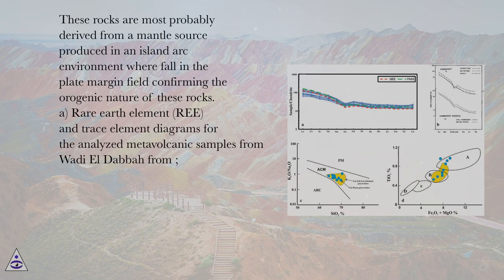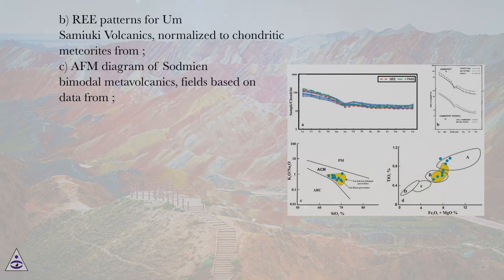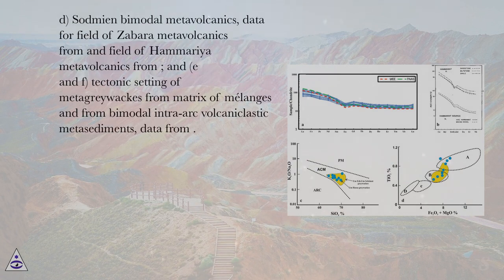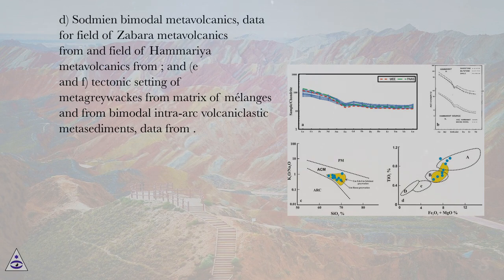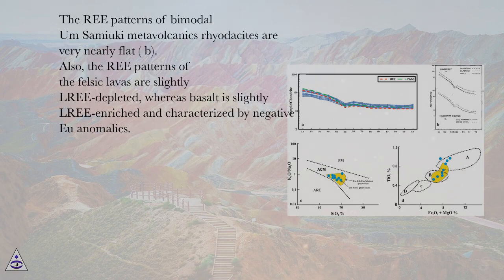Rare earth element (REE) and trace element diagrams for analyzed metavolcanic samples from Wadi el-Daba (A), REE patterns for Aum-Samiyuki volcanics normalized to chondritic meteorites (B), AFM diagram of Sodmian bimodal metavolcanics (C), and Sodmian bimodal metavolcanics with fields for Zabara and Hemariya metavolcanics (D), and tectonic setting of metagraywackes from mélange matrix and bimodal intra-arc volcanoclastic metasediments (E and F). The REE patterns of bimodal Aum-Samiyuki metavolcanics rhyodacites are very nearly flat.